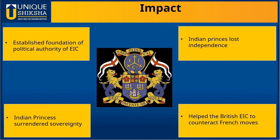The Subsidiary Alliance System shattered the Indian states completely and established the foundation of British political authority in India. The Indian princes accepting the treaty had to surrender their sovereignty, and in this way the Indian princes lost their independence. The system also helped the company to effectively counteract any possible French moves in India.